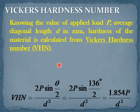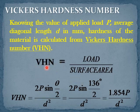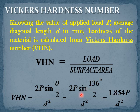The Vickers hardness formula is: VHN = Load / Surface Area = (2P × sin(θ/2)) / d², where θ is the opposite face angle equal to 136 degrees. Substituting and simplifying gives: VHN = 1.854 × P / d².